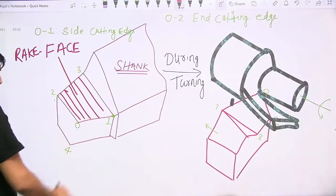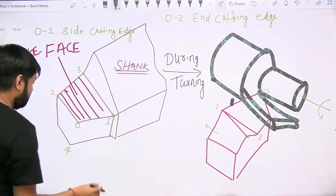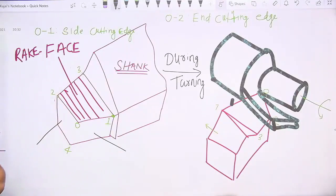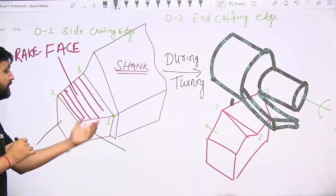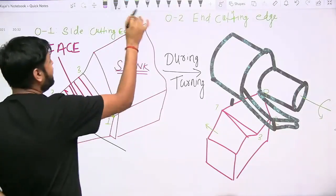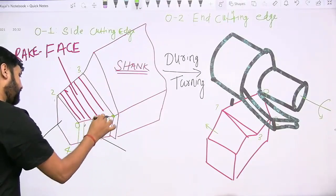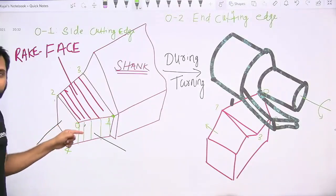One surface is below the 01 cutting edge. Let us shade it. This green color surface is below the 01, that is the side cutting edge.